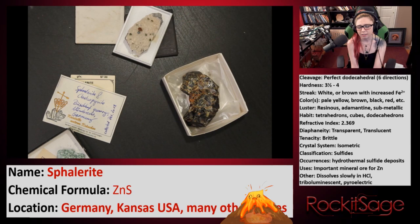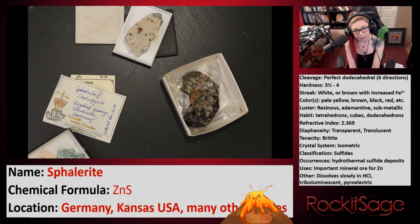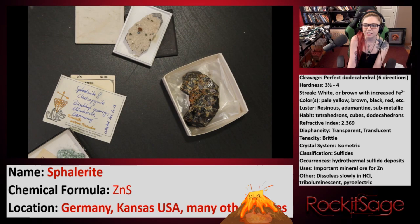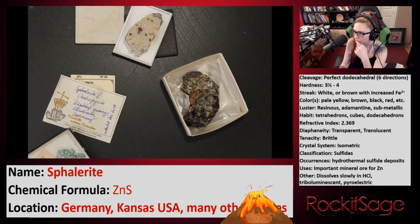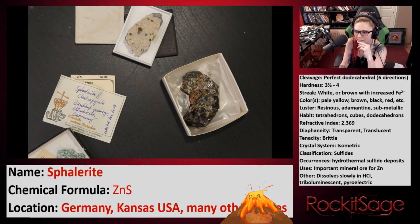It is brittle — that's how it deforms under stress or pressure. In terms of crystal system, it forms in the isometric, which is one of six crystal systems. It's in the sulfides, and we can see it has sulfur in the crystal formula. It occurs in hydrothermal sulfide deposits. It's an exceptionally important ore for zinc — actually the most sought-after mineral for zinc — and so it's largely mined not for mineral collectors, but for industrial uses.